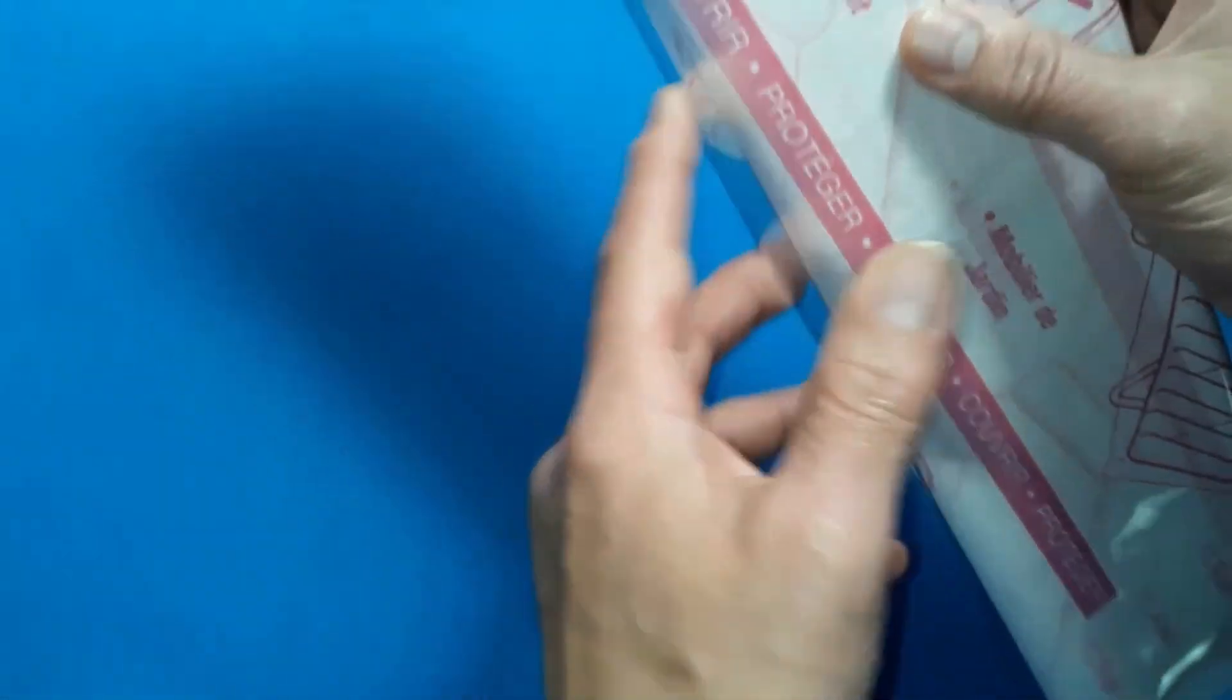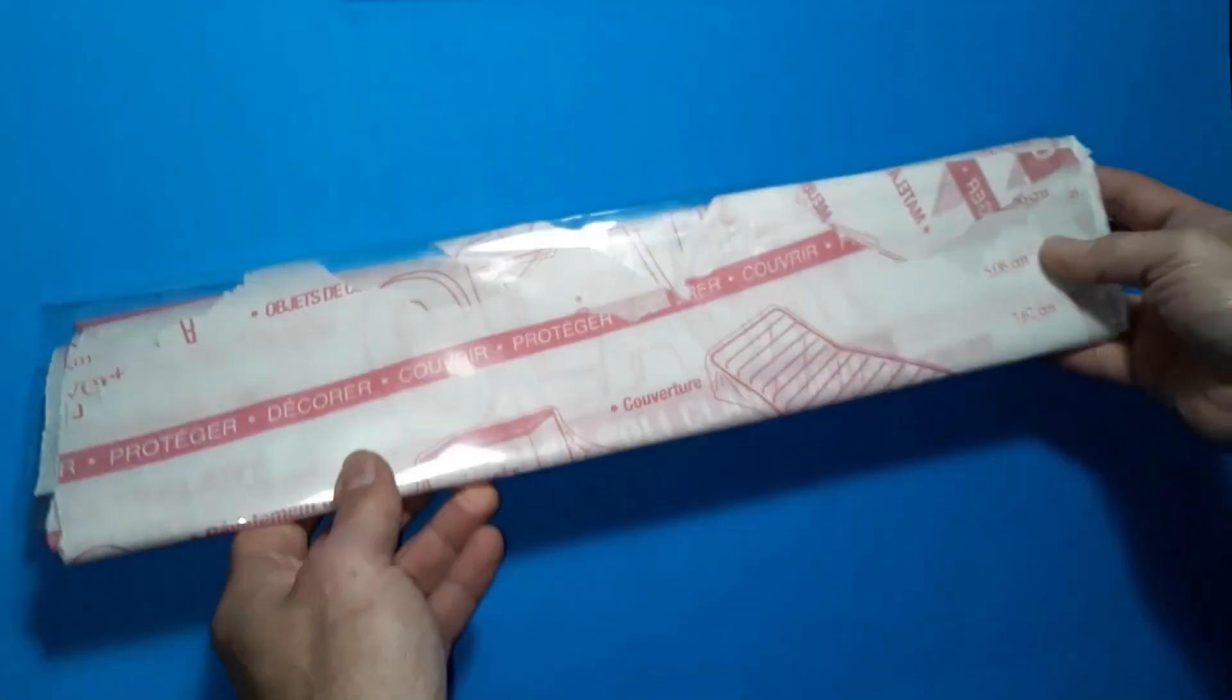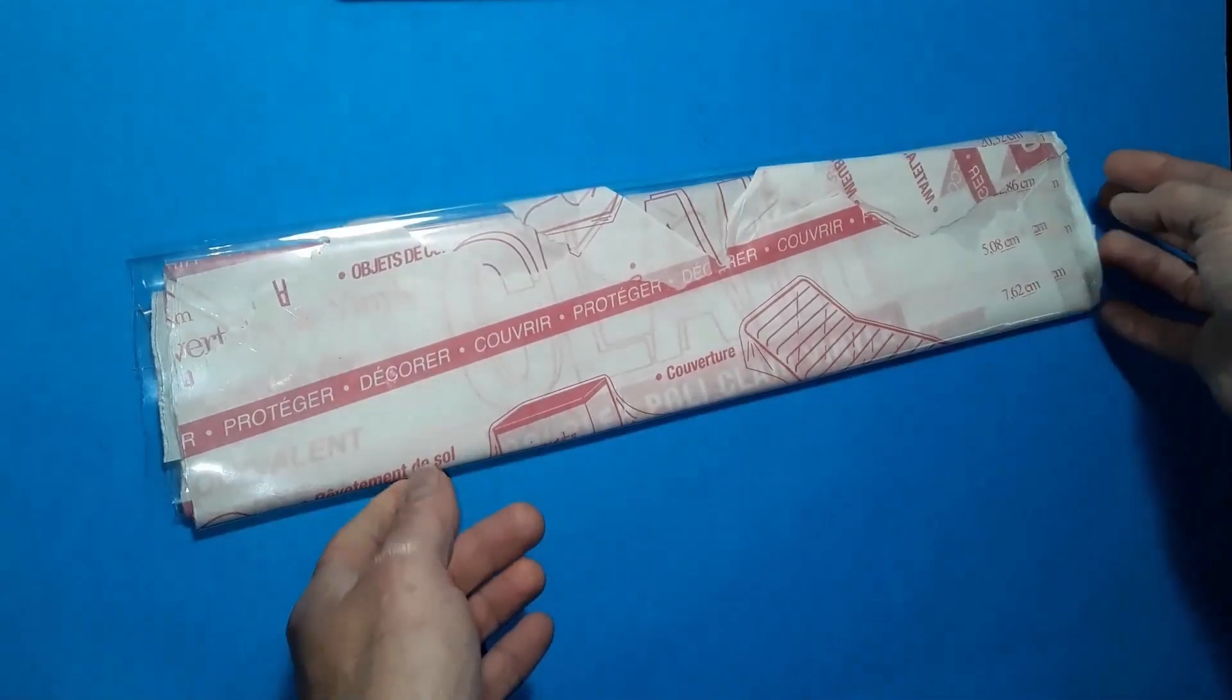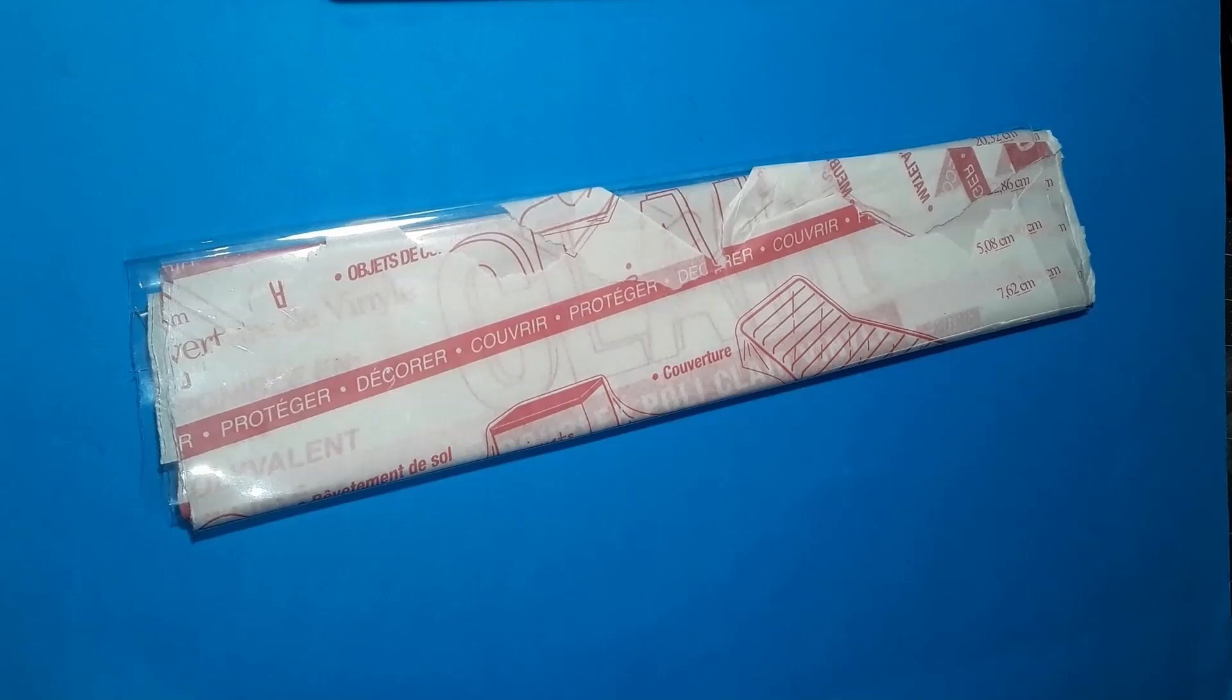It can also be used for windows like on our P-40 Warhawk model. In our opinion, it is the best alternative to using soda bottles, soap containers or any other piece of plastic for creating and making canopies for aircraft.